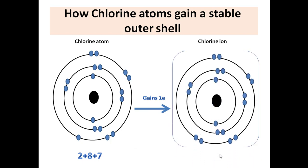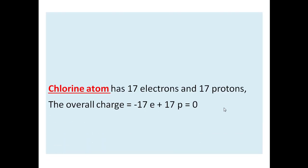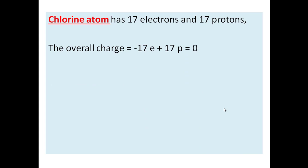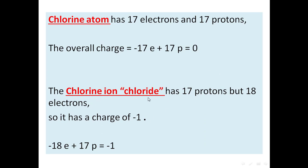After gaining this electron, its outer shell is filled. But now we have an overall charge of negative one. After gaining the electron, the total number of electrons in the chlorine atom becomes 18. All atoms are neutral with equal protons and electrons, but now we have a chloride ion. It has 17 protons — proton numbers don't change — but 18 electrons, so the overall charge of the chloride ion is negative one.